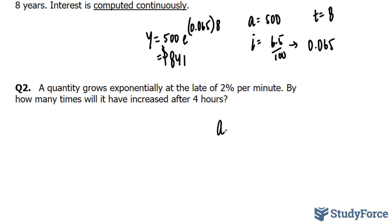So a equals 1, and our rate is 2%. So n equals 2 divided by 100, and we end up with 0.02 per minute.